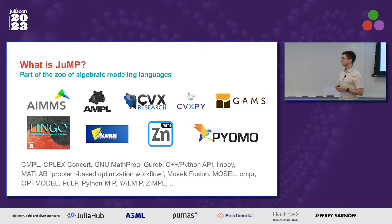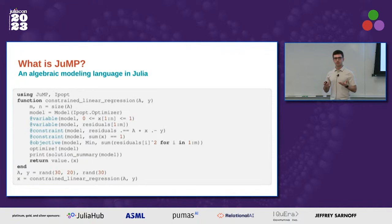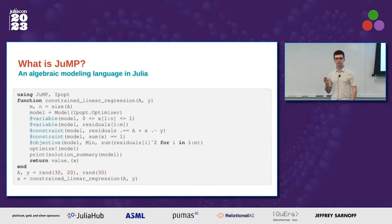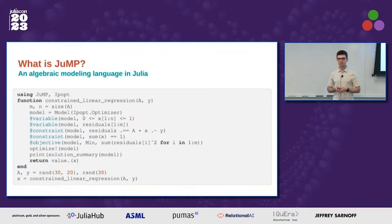What algebraic modeling is: you write down some code that defines an optimization problem, and this algebraic modeling language handles the translation of the math you wrote down into whatever data structures or code is needed to actually run some optimization algorithm, and it gives you the answer back. Here we've defined decision variables X and residuals, added some linear constraints and an objective — you can see we're writing a least squares regression problem where the regression coefficients are defined to be within zero to one and sum to one. We hand it off to Ipopt, we optimize, we get the solution back.